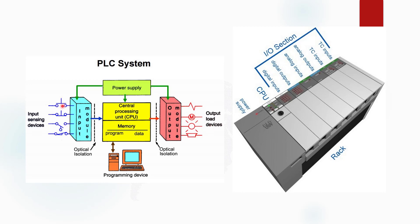These are the inputs and these are the outputs. This is called the input module and this is the output module. PLC has a central processing unit, memory, and power supply. To program the PLC, we use an external programmable device such as a laptop or desktop, connected with the help of an Ethernet cable.